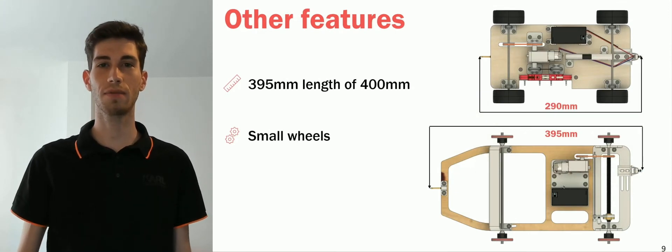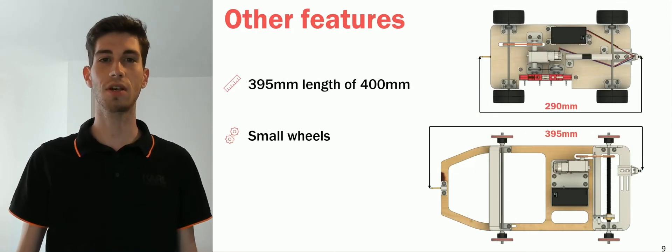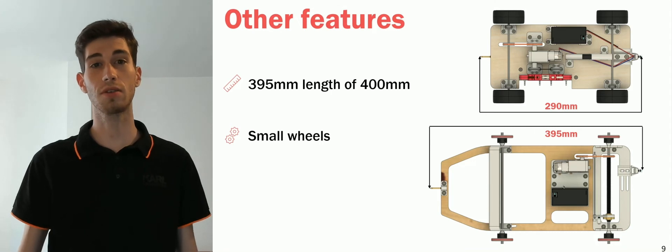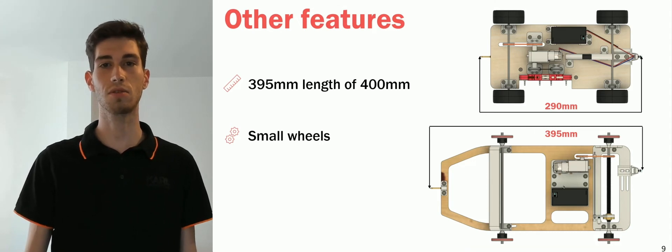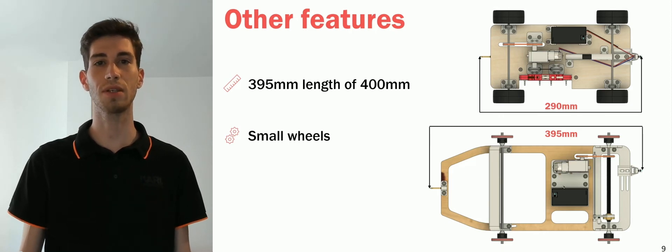We have used the full length available to us, reducing the distance the car travels on each run, increasing accuracy as errors are proportional to distance traveled. Over a 1.5 meter run, the length increase you can see here reduces the error by 7%.